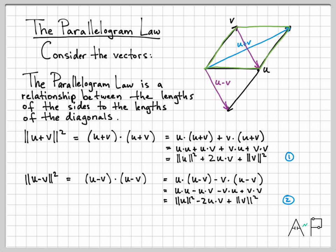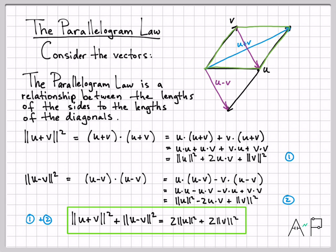Look what happens if I add up equation one plus two. On the left side, I'm going to have the norm squared of u plus v plus the norm squared of u minus v. On the right side, I have two norm squared of u—there's one here and one here. I also have two norm squared of v, and look what happens to the middle term: those completely cancel out. So all I'm left with is two u norm squared plus two v norm squared.